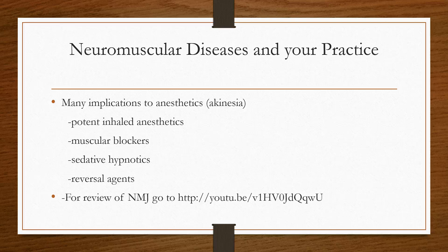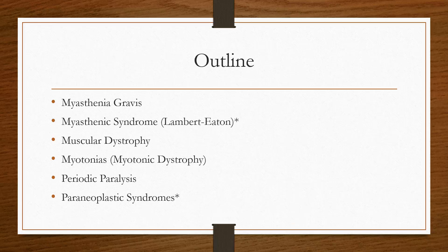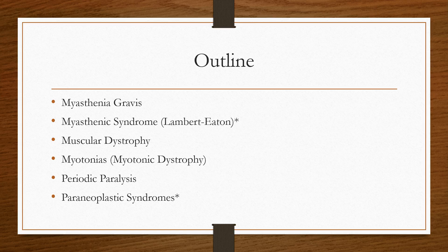You'll get a lot more out of this briefing if you have a firm understanding of neuromuscular junction physiology — if you need to review that, watch my original YouTube video at the link provided. Here's the outline of what we're going to cover today. Morgan & Mikhail has a whole chapter dedicated to neuromuscular diseases while Barash just classifies these as rare and coexisting. We're going to talk about myasthenia gravis, myasthenic syndrome, muscular dystrophy, myotonia, periodic paralysis, and other paraneoplastic syndromes.